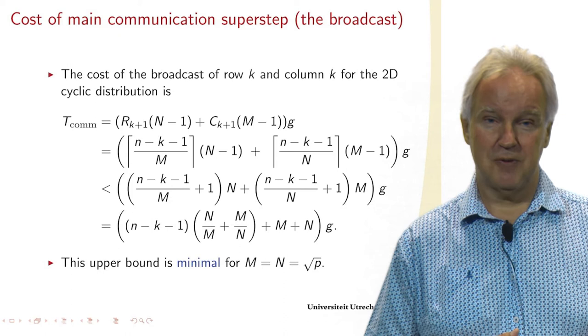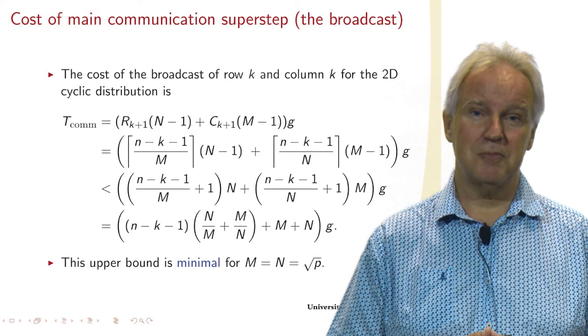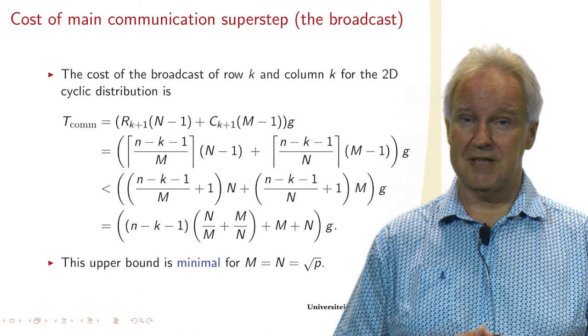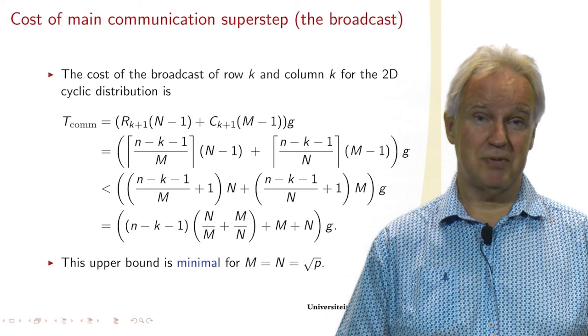We can also look at what happens to the communication time. Remember that we had R_{K+1} rows, and for every row we had to send one element to all the other processors, to N minus 1 processors. So that's why we get a term R_{K+1} times (N-1), and a similar term for the C, times G. That's the communication time per data word.